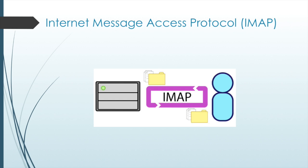The Internet Message Access Protocol is another protocol for retrieving email messages. When a user connects to an IMAP-capable server, copies of the messages are downloaded to the client application, but the original messages are kept on the server until manually deleted. Users view copies of the messages in their email client software and can create a file hierarchy on the server to organize and store mail. When the user decides to delete a message, the server synchronizes that action and deletes the message from the server.